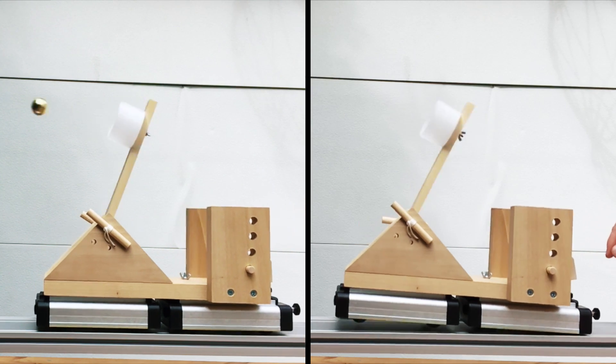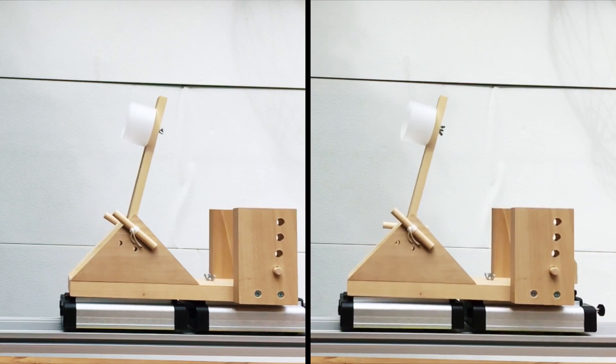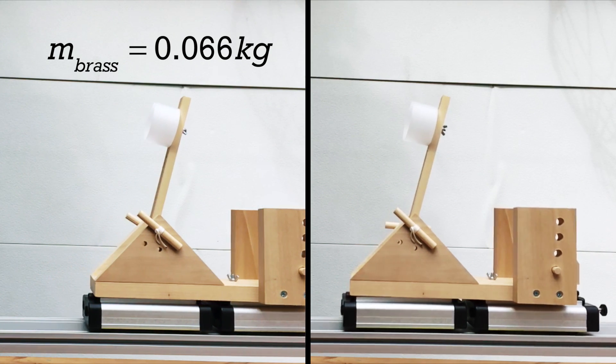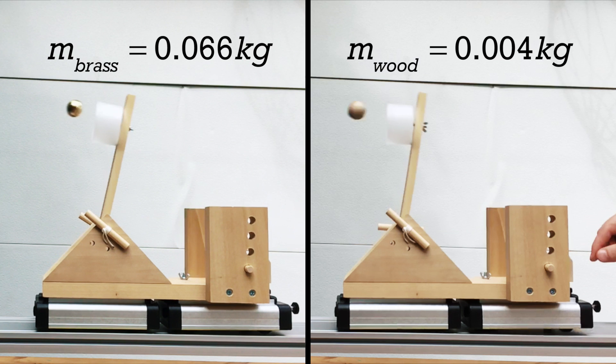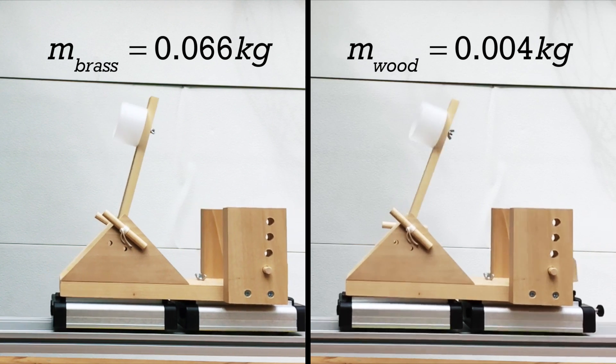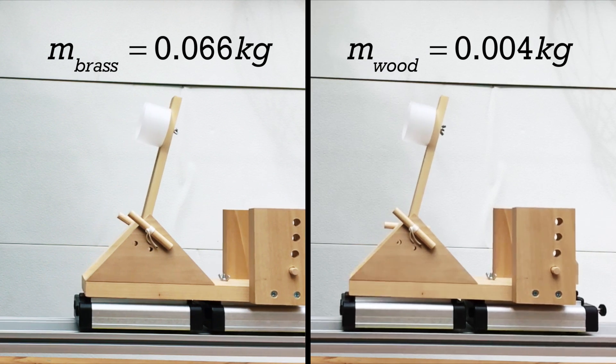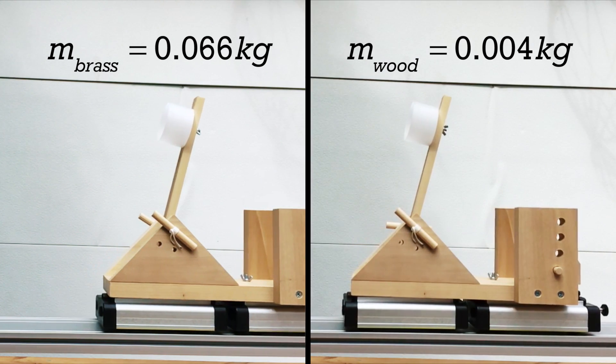Just so you know, if instead of using a brass ball with a mass of 0.066 kilograms, you use a wooden ball with a mass of 0.004 kilograms, the nerdapult does not move to the right. Do you think you could explain why?